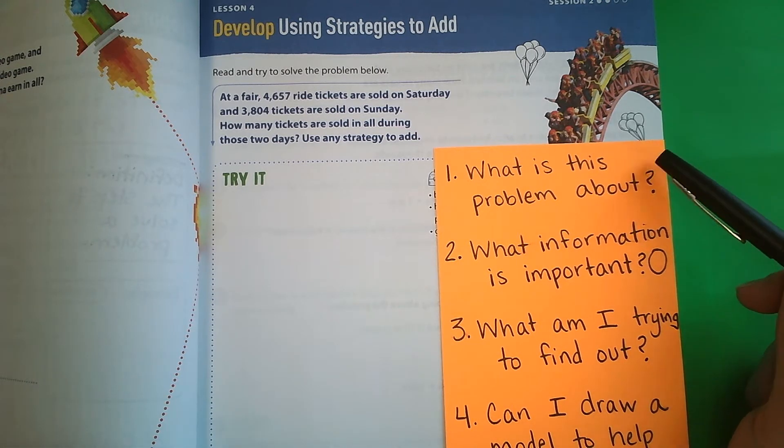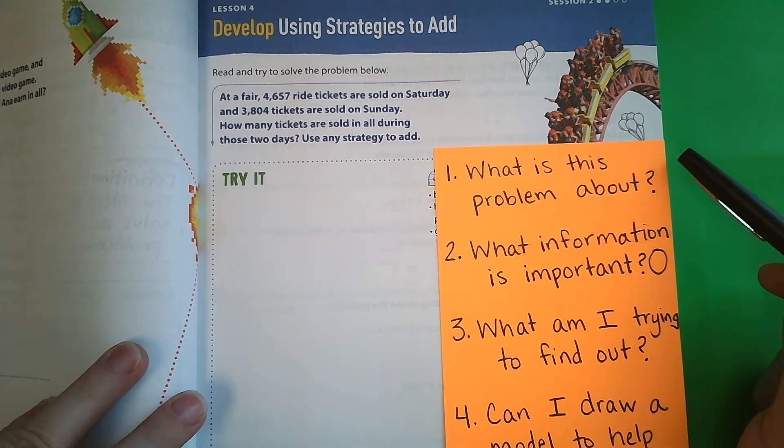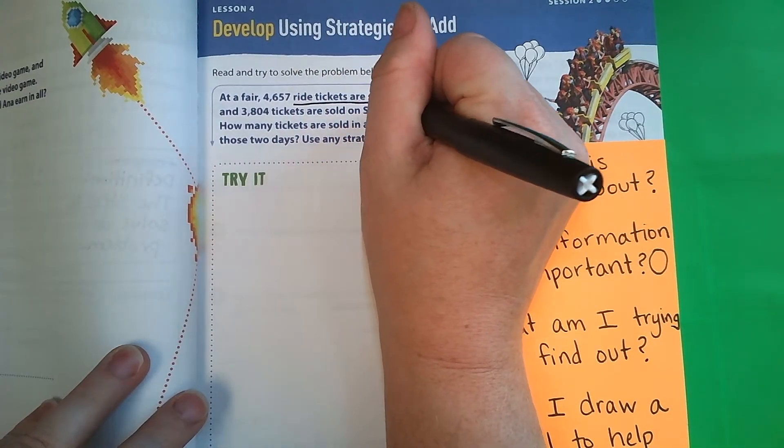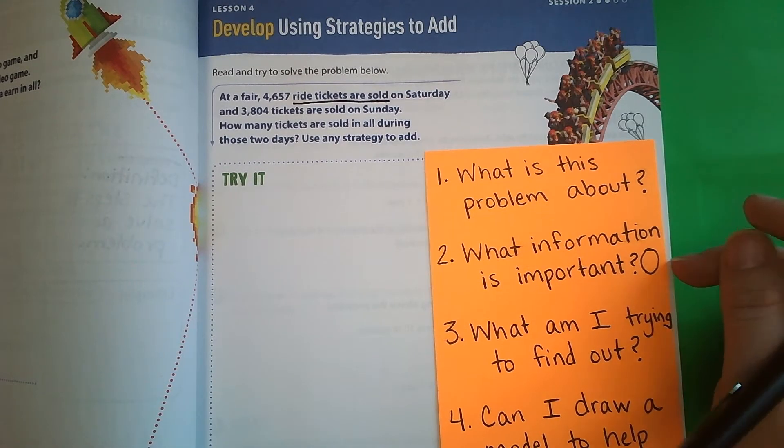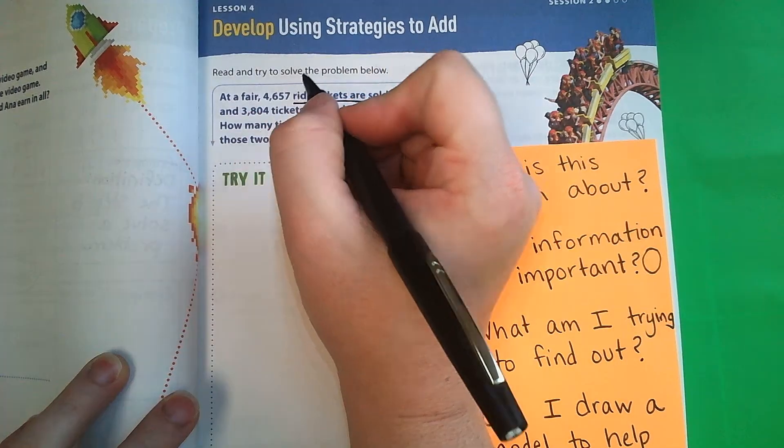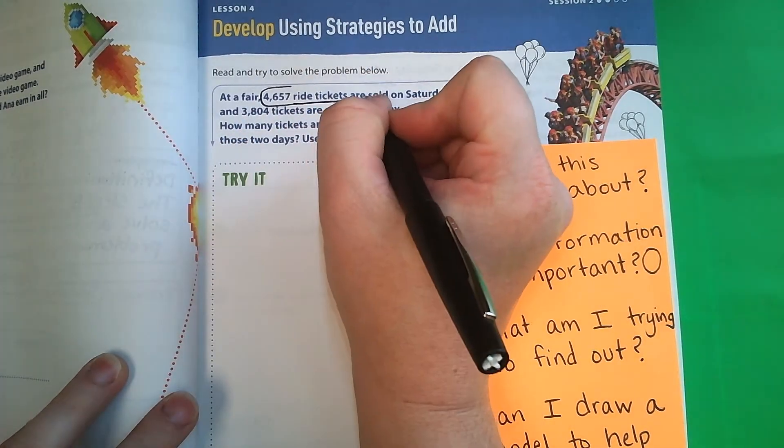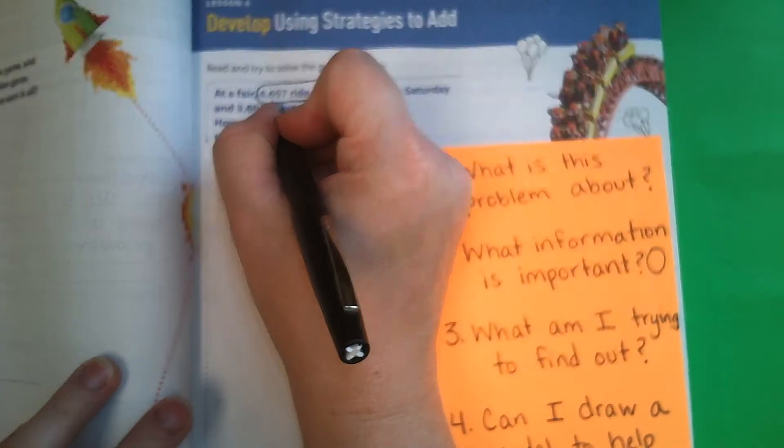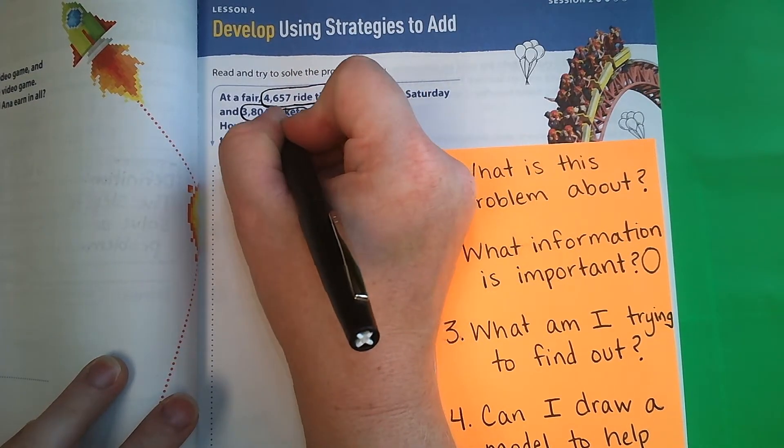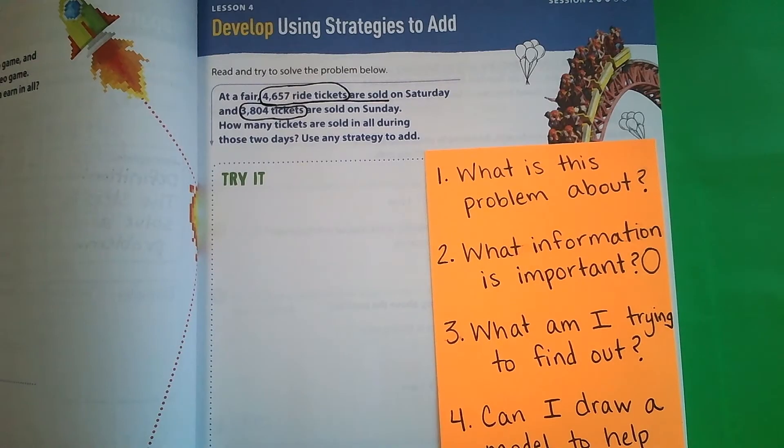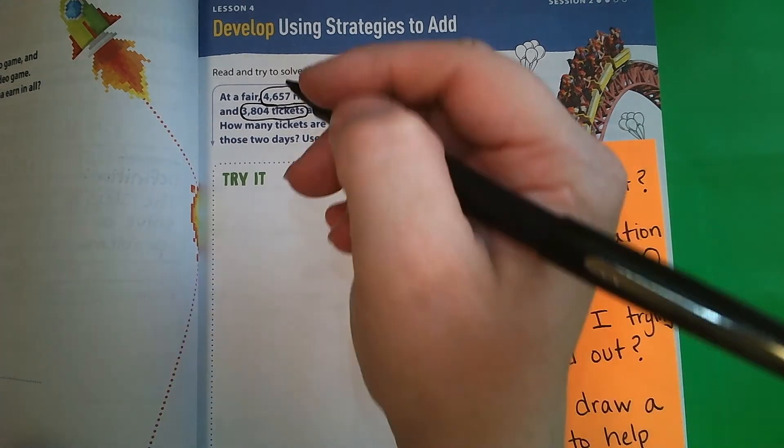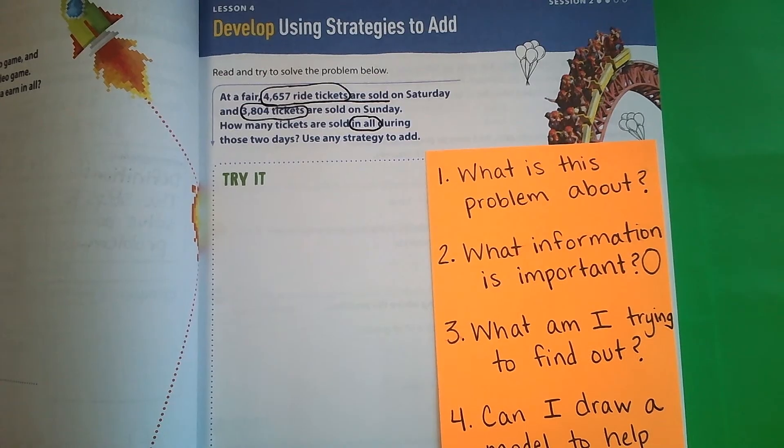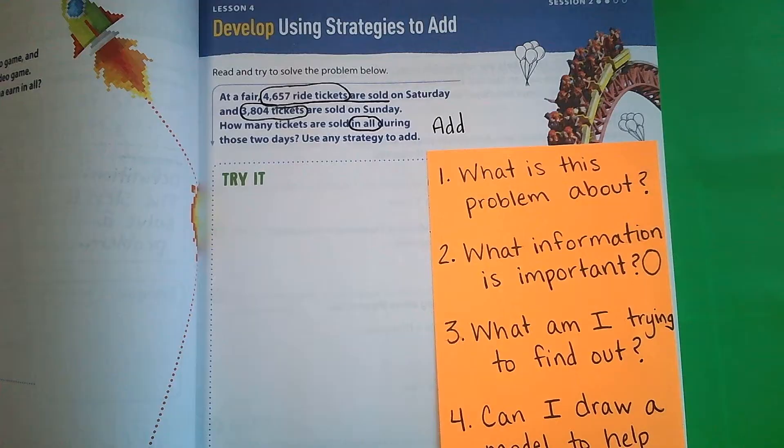So first thing we're going to do is ask ourselves, what is this problem about? We are talking about ride tickets that are being sold on Saturday and Sunday. What information is important? The first information that's important is 4,657 tickets are sold on Saturday, and the next is 3,804 tickets are sold on Sunday. And then there's one more thing that's important, and it's in our question down here, and it's in all. In all is very important because it tells us that we are going to add. It means add.